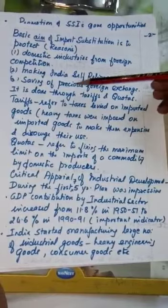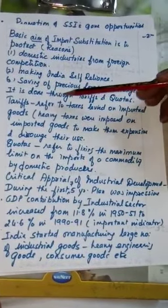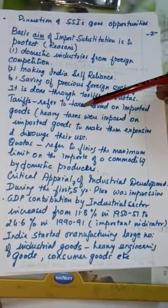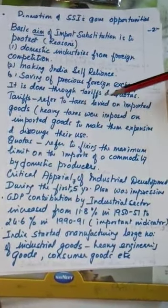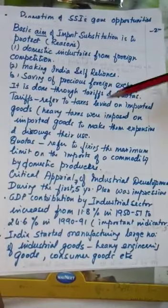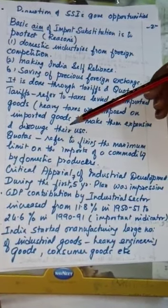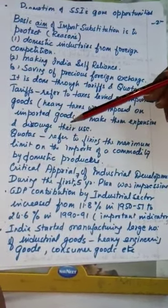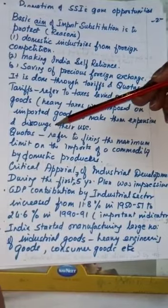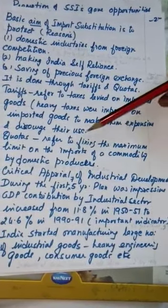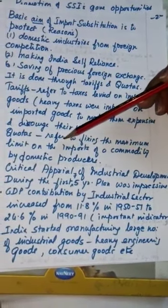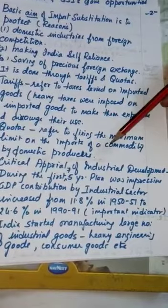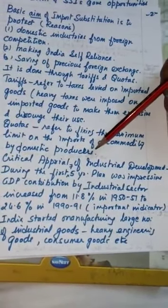Import substitution was done through tariffs and quotas. Tariffs refer to taxes levied on imported goods — heavy taxes were imposed on imported goods to make them expensive and discourage their use. Quotas refer to fixing the maximum limit on imports of a commodity by domestic producers.